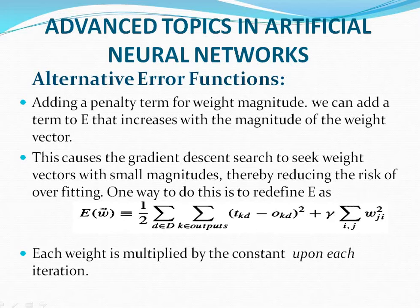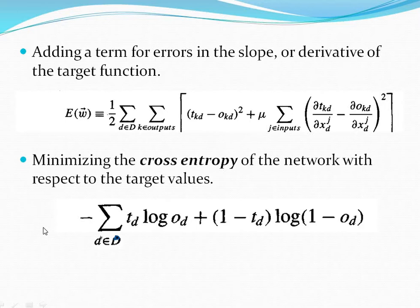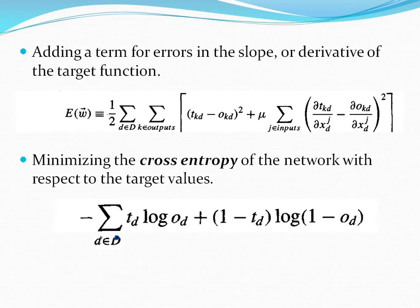This is one alternative error function. Another is adding a term of errors in the slope or derivative of the target function. For this error function, we add one more derivative of the target function. We can also use minimizing the cross entropy of the network with respect to the target values as another alternative error function for advanced neural networks.